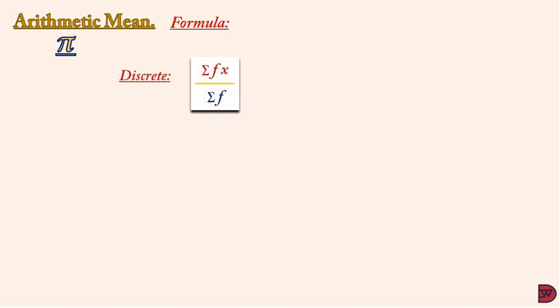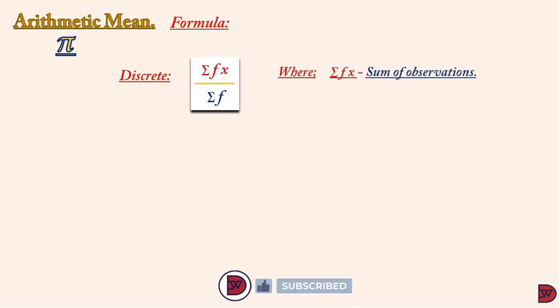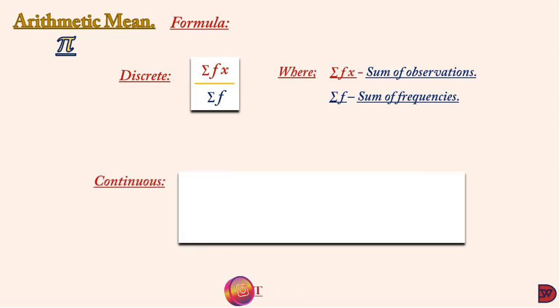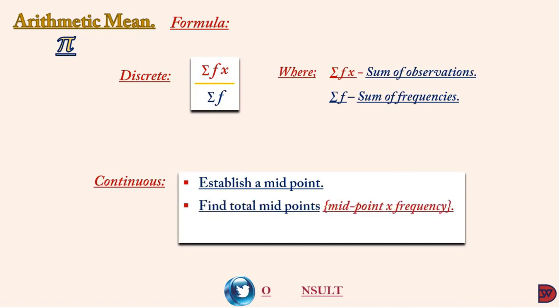For the arithmetic mean formula: for discrete variables it is sigma(fx) divided by sigma(f), where sigma(fx) is the sum of all observations — each observational value multiplied by its frequency — divided by the sum of frequencies sigma(f). For continuous variables, we first establish a midpoint, find the total of midpoint multiplied by frequency which is sigma(fx), then divide by sigma(f).